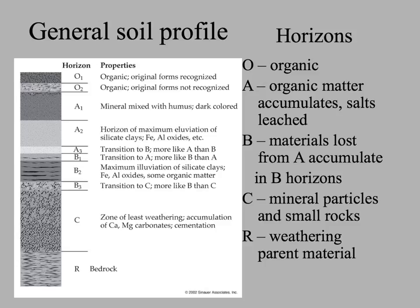Basically there are four layers. On the very top, the organic layer — the O horizon — then the A layer, in which organic matter is accumulating as water goes through the top layer. Then other smaller materials accumulate further down in the B horizons. In the C layer, there are mineral particles and small rocks, and then at the very bottom is the bedrock. Each of the horizons may have several parts in it. The relative depth and color of these layers is characteristic of different parts of the world.